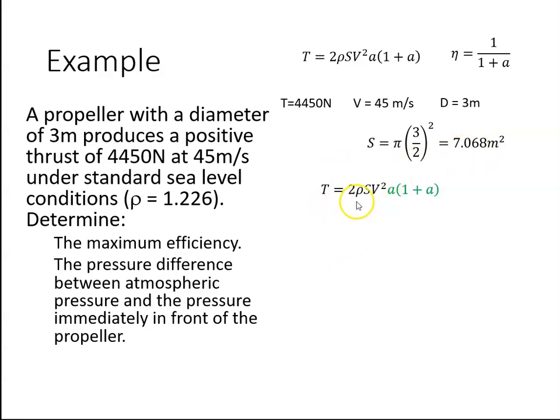I have all the variables here in black. What I don't have is the variables here in green. When I multiply them out, I get A squared plus A. Then we can rearrange this equation. We have A squared plus A equals T divided by 2 rho S V squared.